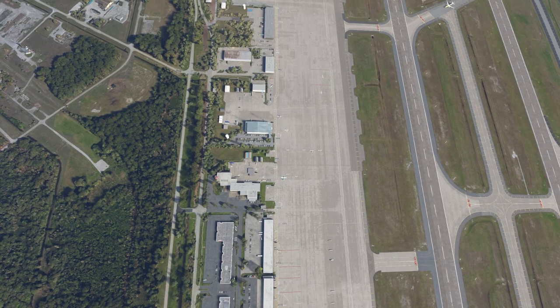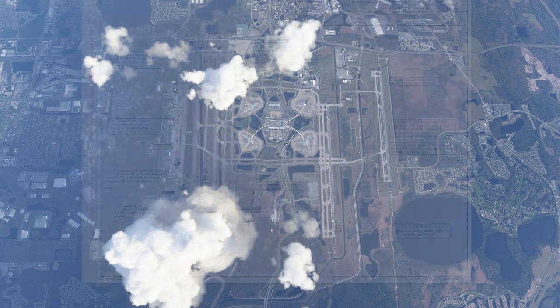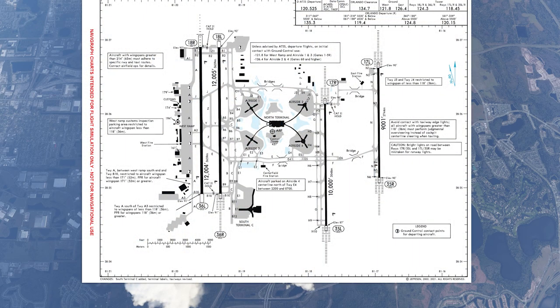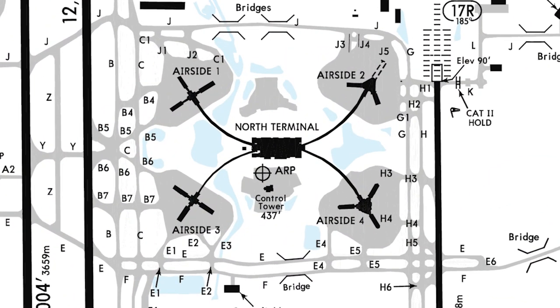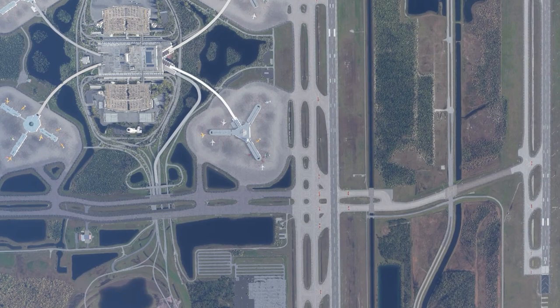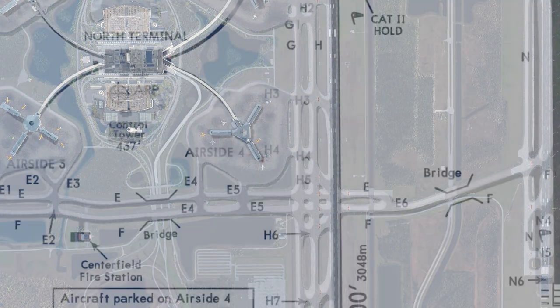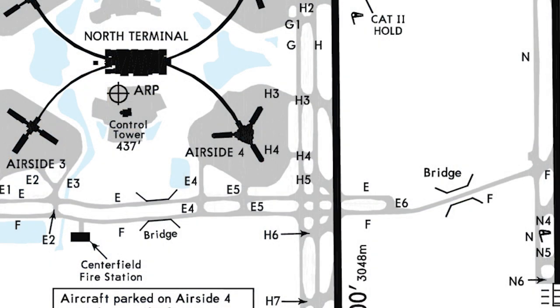All taxiways are filled with gray shading. You can see from the Orlando chart there are a lot of taxiways at this airport. Taxiways are identified using alphanumeric codes — Alpha, Bravo, Charlie. Sometimes large airports will actually run out of single letters, which is why they combine an alphanumeric letter with a number: Hotel 5, Echo 3, and so on.